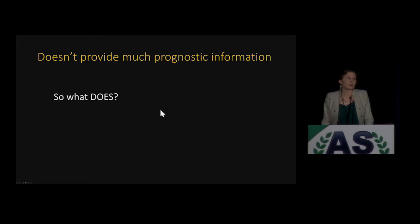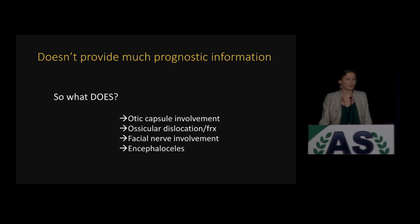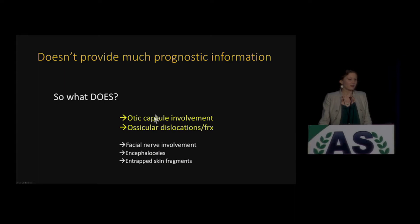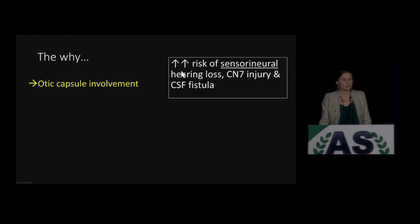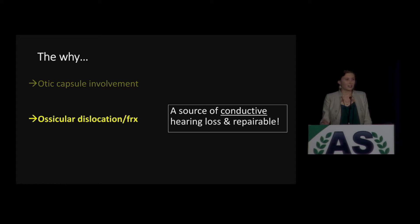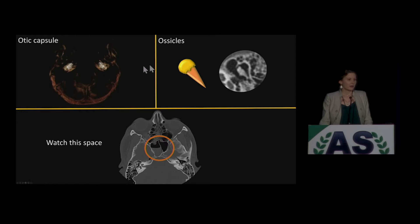So if that doesn't provide good prognostic information, then what does? It turns out these are what actually give you some prognostic information. Since I'm a trauma radiologist, I'm going to talk about these two. Trapped skin fragments causing late cholesteatoma — I'm not going to see that in the trauma setting. It turns out if there is brain herniating into the temporal bone, that's bad, and you should tell them about that. Facial nerve involvement is highly correlated with otic capsule involvement and is often a clinical diagnosis as well. So we're going to focus on these two.